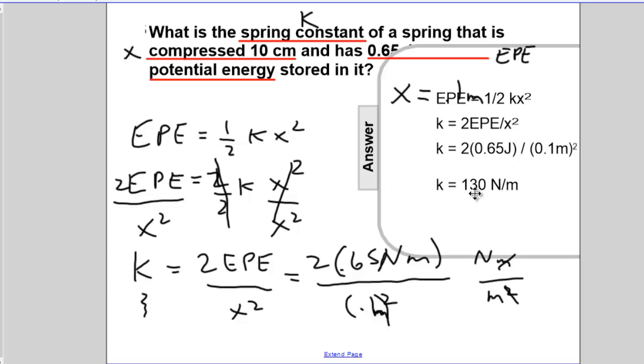So the physical meaning of the spring constant is the amount of force required to stretch a spring 1 meter. So this spring would require 130 newtons of force to stretch 1 meter, and twice that, 260 newtons to stretch 2 meters. Remember, the farther you stretch a spring, the more effort or force is required.